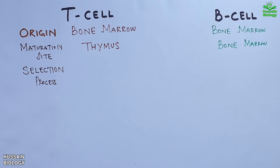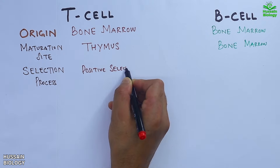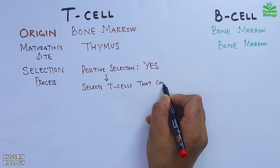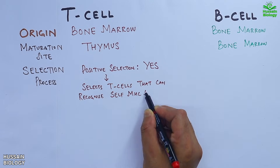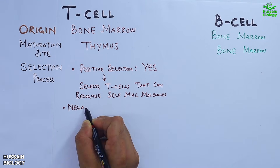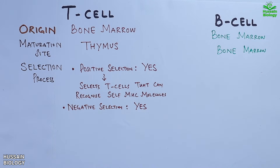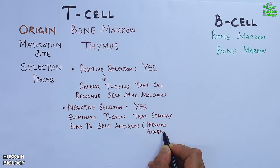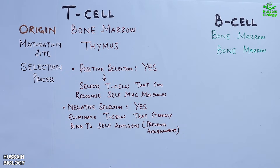Third is the selection process, which is crucial for immune tolerance. T-cells undergo both positive and negative selection. Positive selection ensures that only those T-cells survive which can recognize self-MHC molecules, whereas negative selection eliminates those T-cells which bind too strongly to self-antigens, thereby preventing autoimmunity. So both positive and negative selection occur in T-cells.